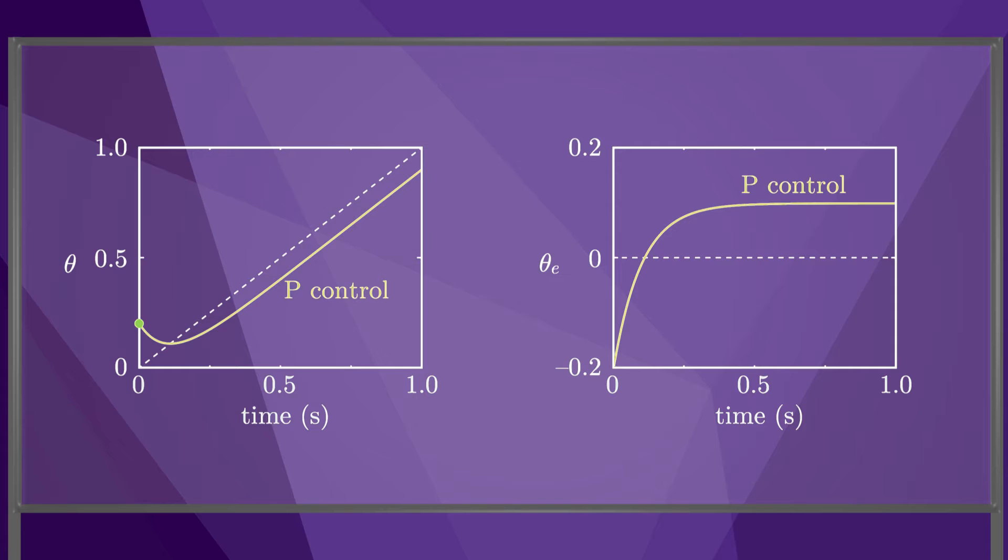On the other hand, if we add an integral term, we see the PI controller achieves zero steady-state error. Here we've chosen the PI controller to be underdamped. A better PI controller would eliminate overshoot and achieve critical damping by choosing a lower gain Ki or a larger gain Kp.